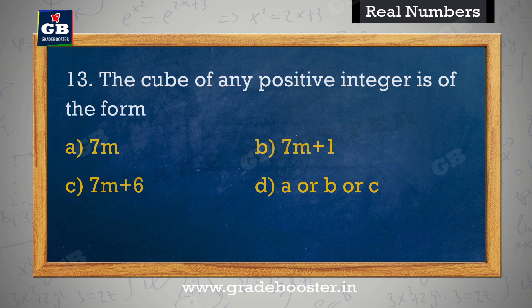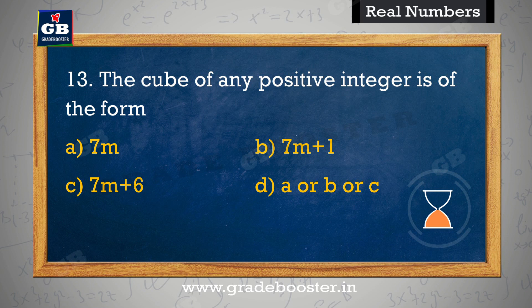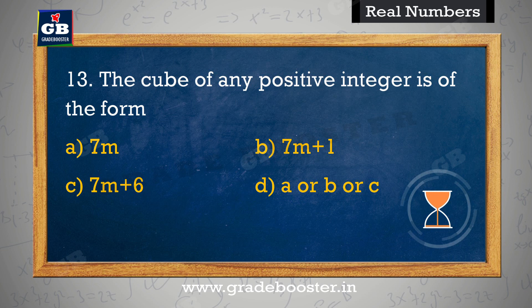The cube of any positive integer is of the form. Kisi bhi positive integer ka cube ka form hai. A. 7M, B. 7M+1, C. 7M+6, D. A or B or C.